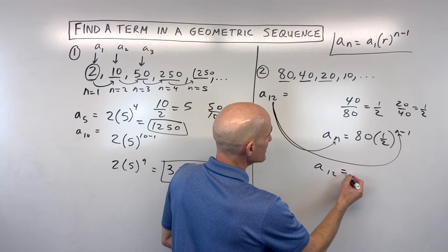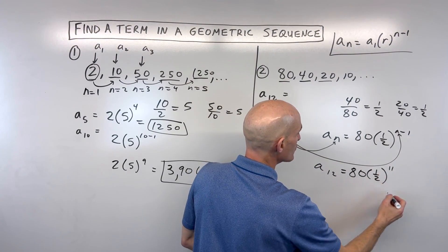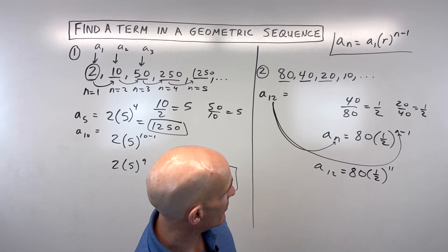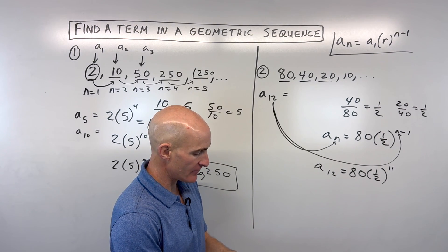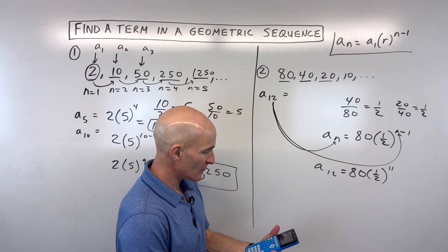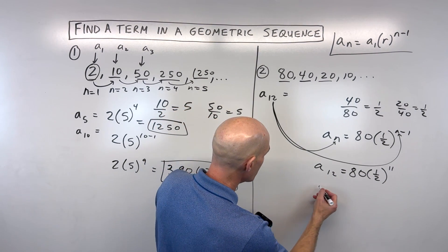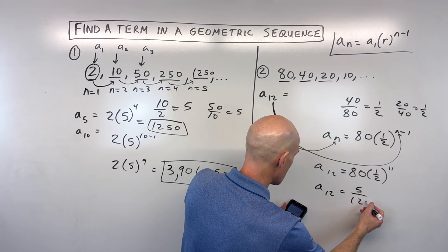So a sub 12 is equal to 80 times 1 half to the 12 minus 1, which is 11. Let's go to the calculator. Let's see what that comes out to. So we've got 80 times 1 half to the 11th. I'm getting a decimal. Let me see if I can convert it to a fraction for us. It's 5 over 128.